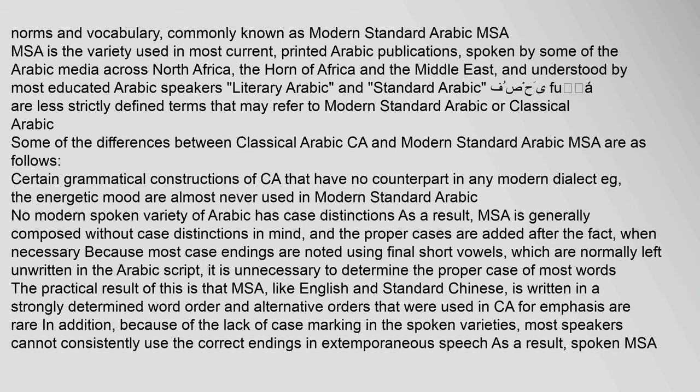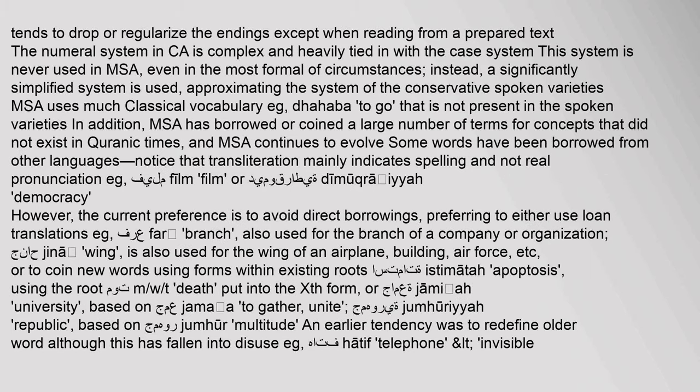Some of the differences between Classical Arabic (CA) and Modern Standard Arabic (MSA) include: certain grammatical constructions of CA that have no counterpart in any modern dialect, such as the energetic mood, are almost never used in MSA. No modern spoken variety of Arabic has case distinctions; as a result, MSA is generally composed without case distinctions in mind, and the proper cases are added after the fact when necessary. MSA, like English and standard Chinese, is written in a strongly determined word order. The numeral system in CA is complex and heavily tied in with the case system; this system is never used in MSA, where a significantly simplified system is used instead.